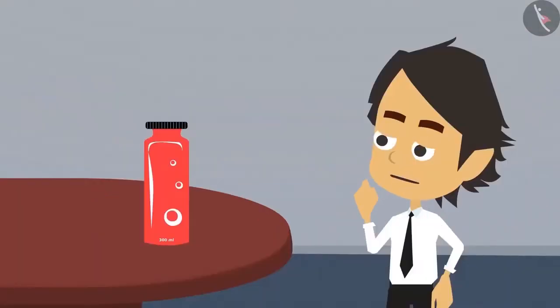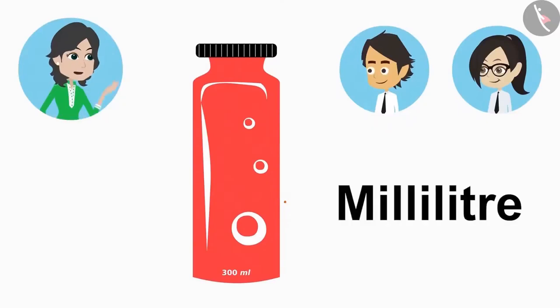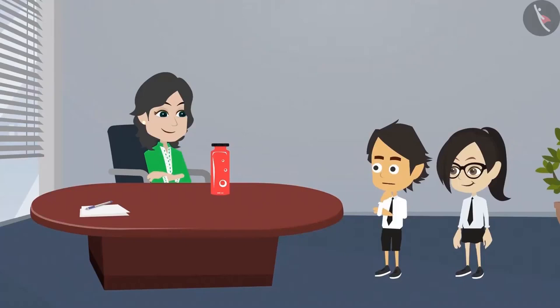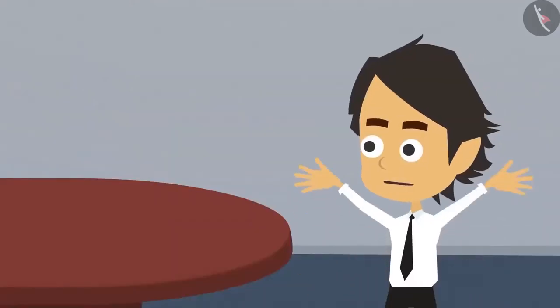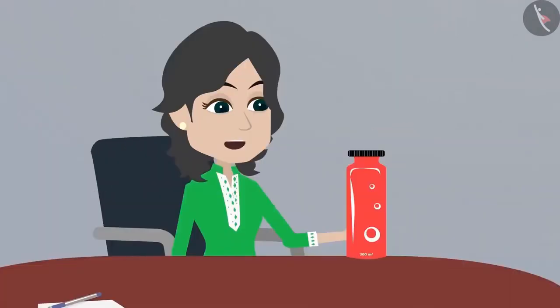But I cannot see. Show it to me. See, here it says that this bottle has 300 milliliters of buttermilk. We use ml to write milliliter. Half of 300 ml will be 150 ml. Which means if we divide the buttermilk into two equal halves, we both will get 150 ml each. Am I correct, madam? You are absolutely correct, Ayushman.